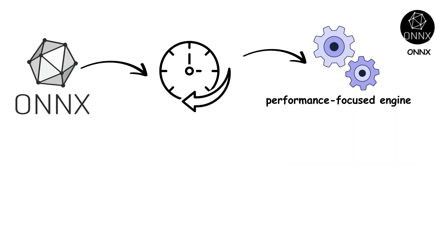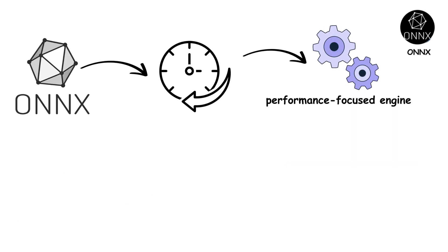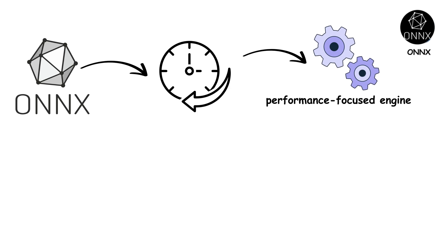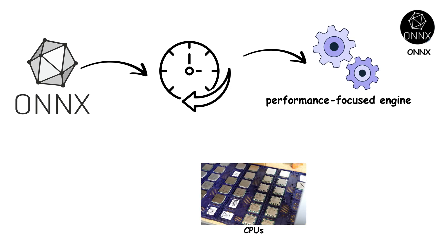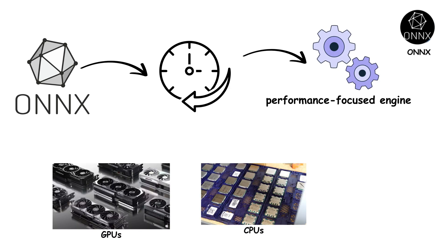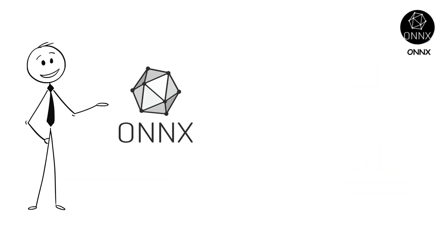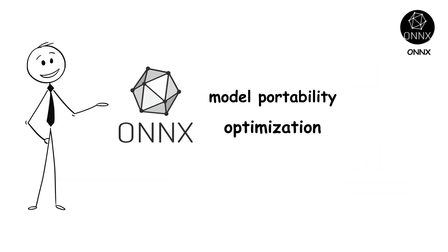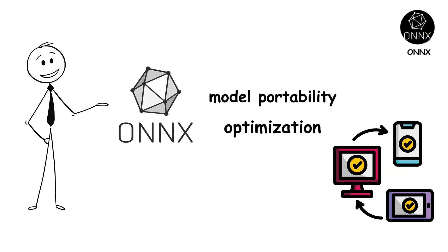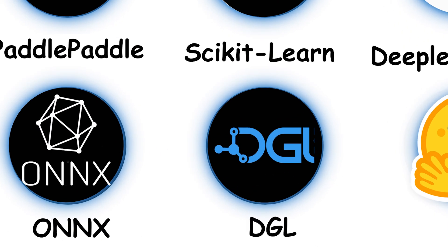ONNX Runtime is a performance-focused engine for ONNX models, providing inferencing capabilities optimized for different hardware, including CPUs, GPUs, and specialized accelerators. It allows for model portability and optimization across different platforms.